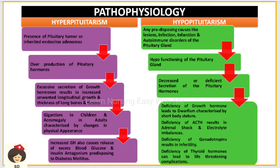Coming to the pathophysiology: in hyperpituitarism, there can be an adenoma — a tumor — which can be inherited or a direct pituitary tumor. When there is a tumor, the tumor cells start to produce more and more hormones. Excessive secretion of growth hormone results in unwanted longitudinal growth; long bones grow in length and width — thickness also increases — which causes gigantism in children and acromegaly in adults.